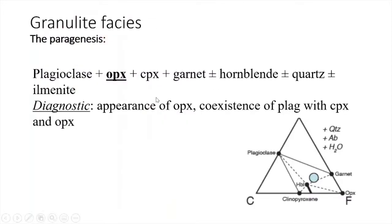Now comes the granulite facies. The paragenesis changes to: plagioclase + orthopyroxene + clinopyroxene + garnet ± hornblende + quartz + ilmenite. Where spinel may be present in the greenschist facies, here ilmenite is present. The coexistence of orthopyroxene, clinopyroxene, and plagioclase is the diagnostic feature of the granulite facies, as represented on the ACF diagram.